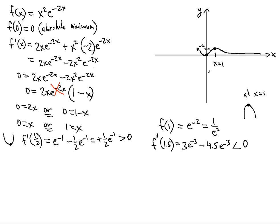Now let's find the inflection points. The inflection point is where the second derivative changes sign. Visually, I would say an inflection point is somewhere between x = 0 and x = 1, where the curvature changes — where the curve goes from concave up to concave down, or vice versa. That tipping point where the curvature changes is the inflection point.